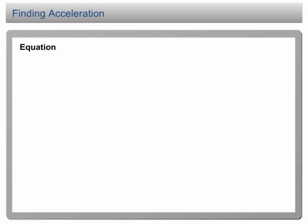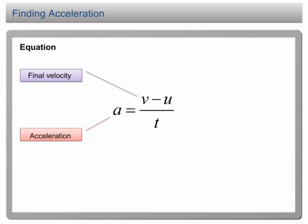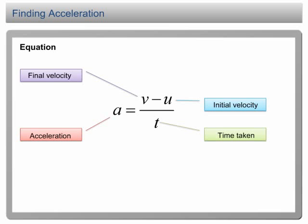Acceleration of a motion can be determined by the equation a = (v - u) / t, where a is the acceleration, v is the final velocity, u is the initial velocity, and t is the time taken for the velocity change.